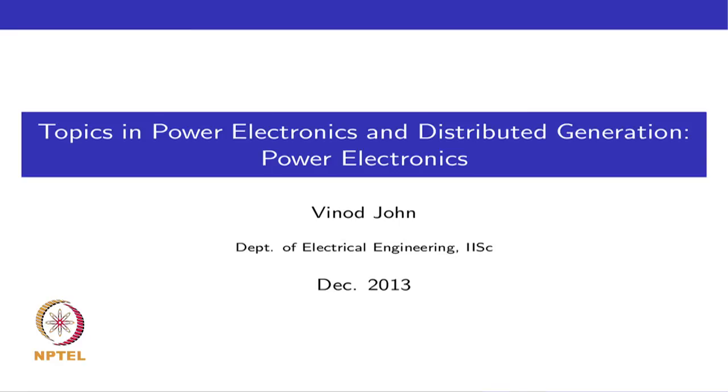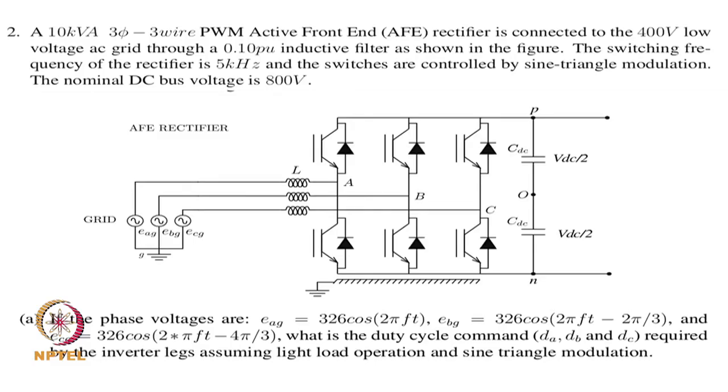Welcome to Class 37 on Topics in Power Electronics and Distributed Generation. In today's class we will discuss a couple of example problems on power electronic component selection and analysis of power electronic circuits. We will first look at a problem of a three-phase three-wire power converter operating as an active front-end rectifier.